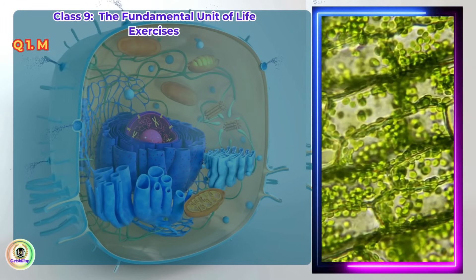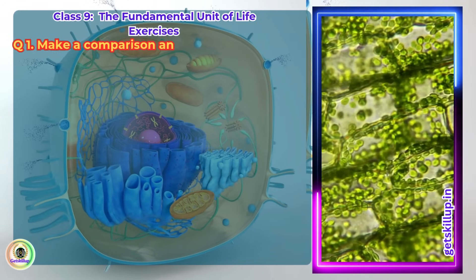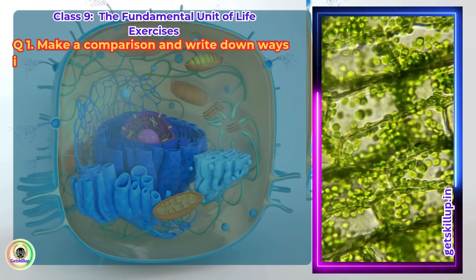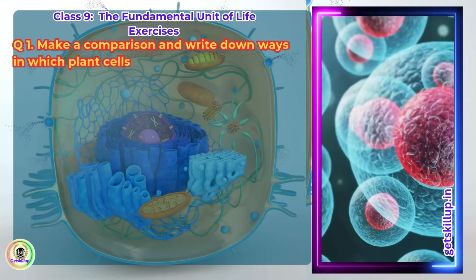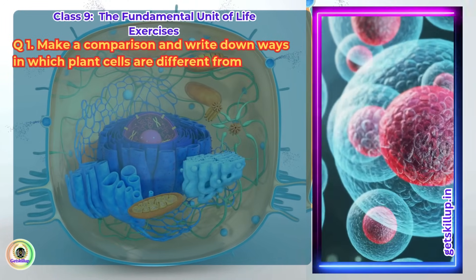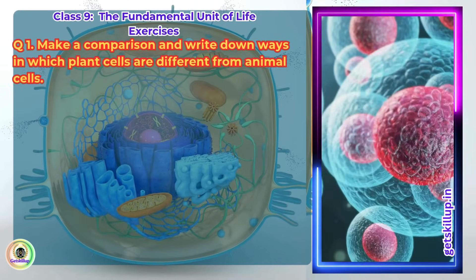Exercises Q1. Make a comparison and write down ways in which plant cells are different from animal cells.